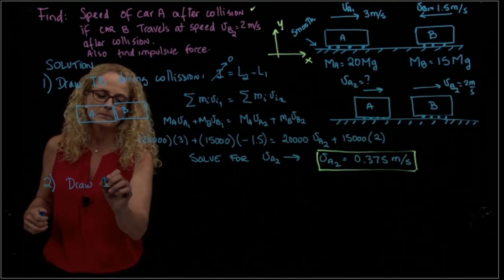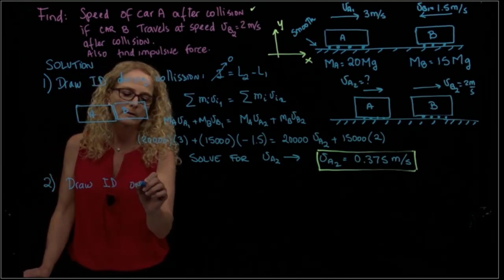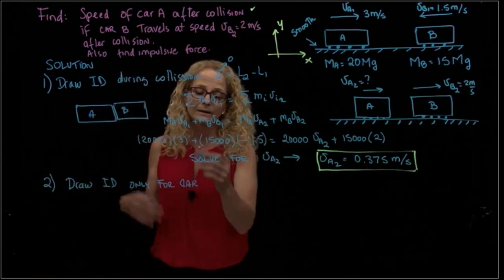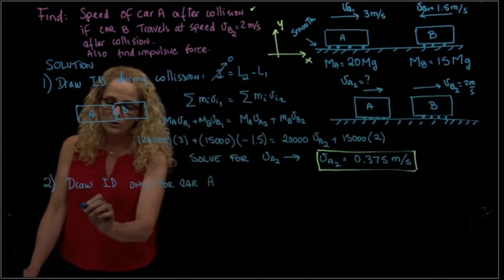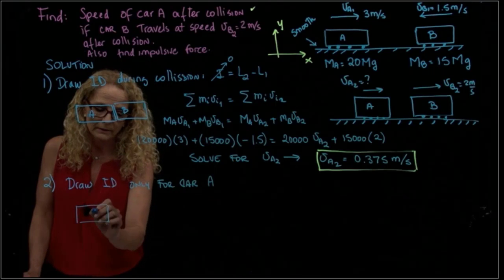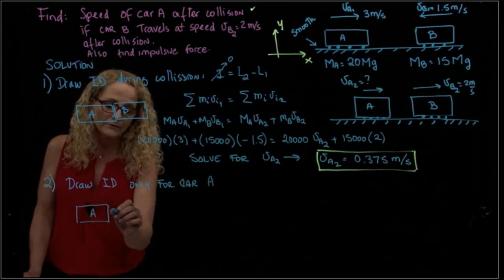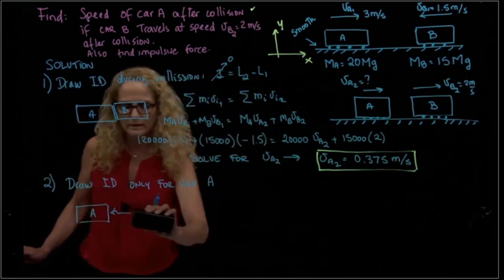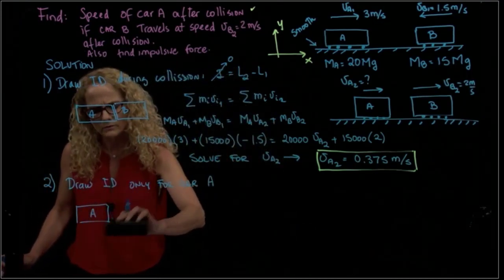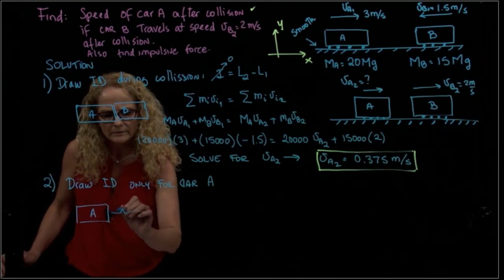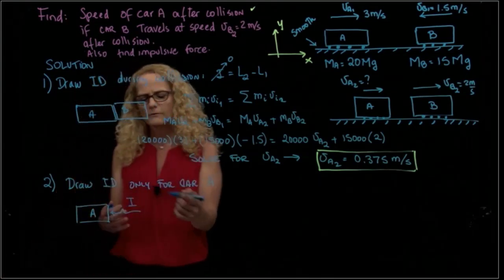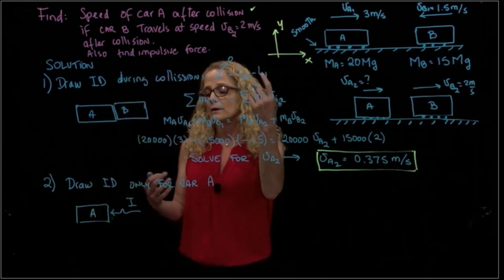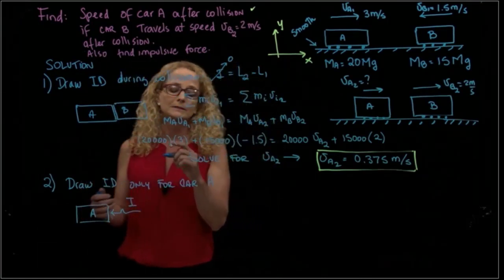Draw the impulse diagram only for car A. If I draw the impact diagram for A, I like to draw it like a vector with a cursive style, so that it makes a difference between a force and an impact. This is not a force - that's the integral of a force over time. And I don't draw the weight or the normal force for the same reason I explained before.